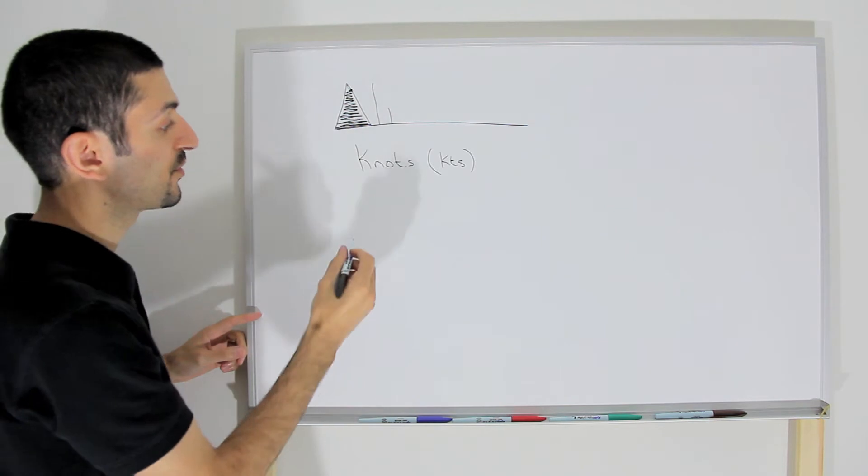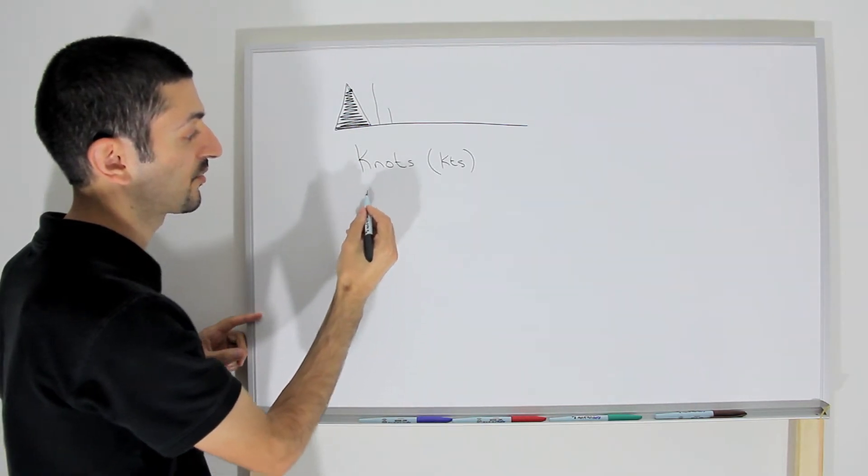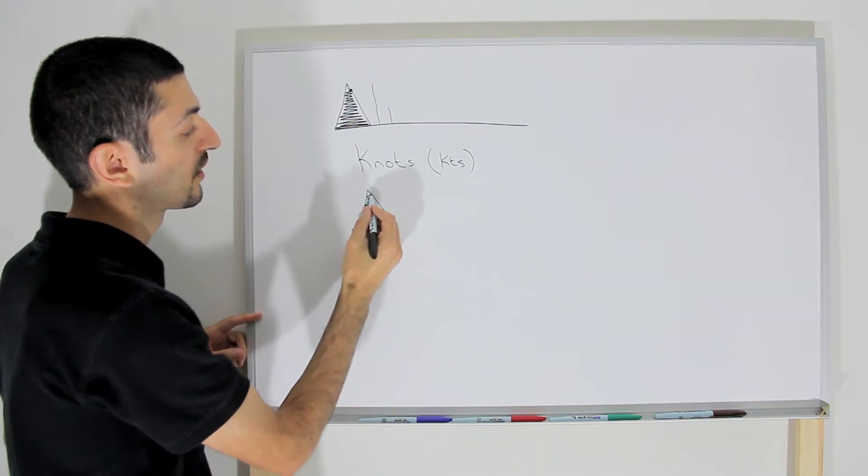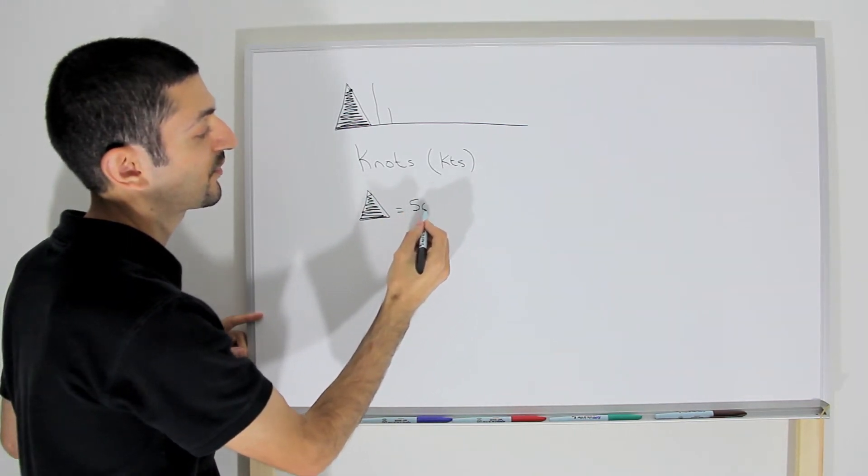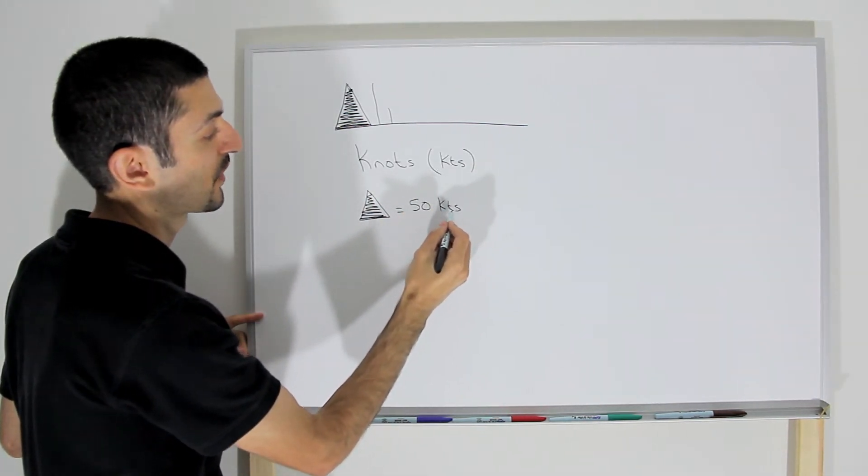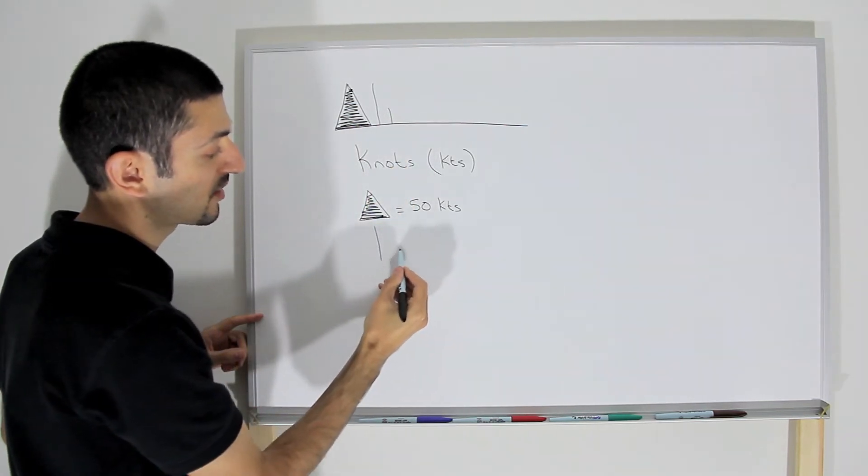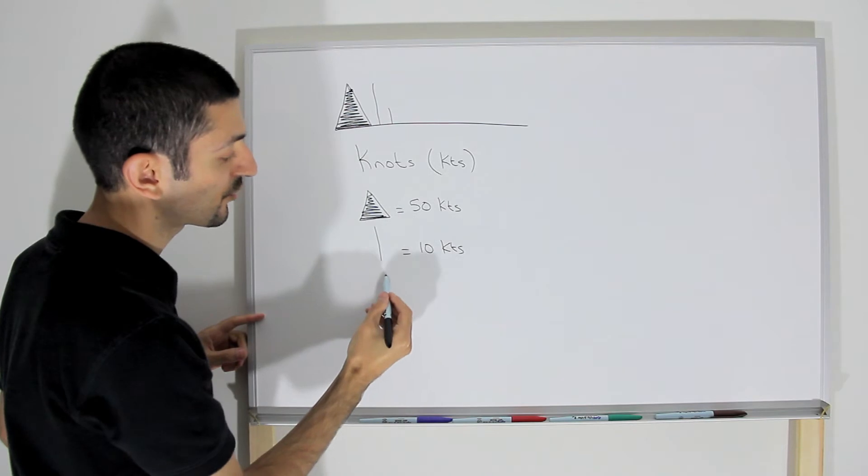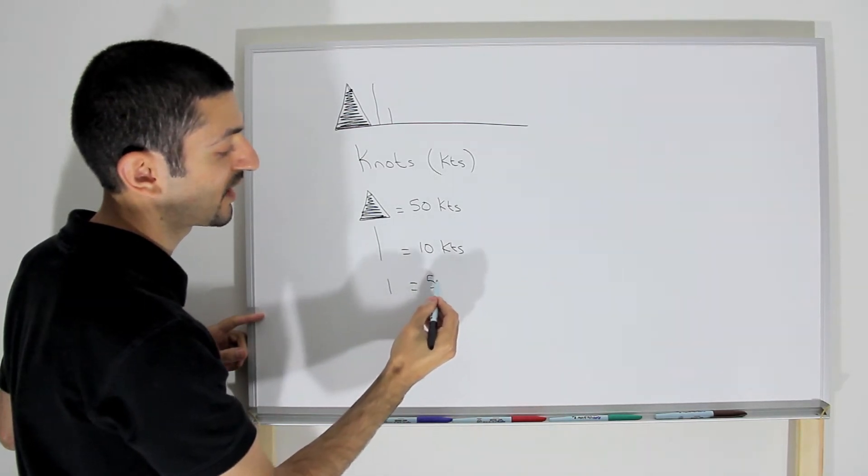Now these symbols are very simple to interpret. The triangle indicates 50 knots, the long line indicates 10 knots, and the short line indicates 5 knots.